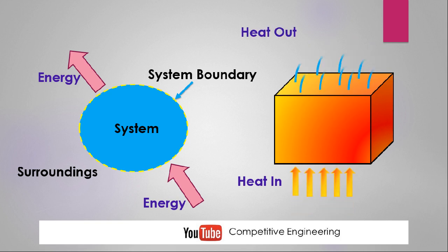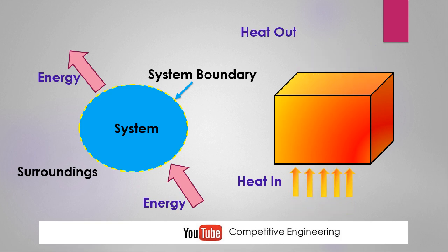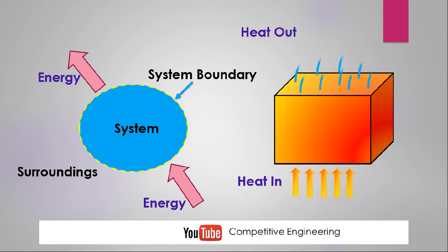When sufficient temperature is reached the cube starts emitting radiation — heat leaves the system to the surroundings. So heat comes in and heat goes out, but there is no mass interaction; the mass remains constant. In a closed system the mass is constant while heat can come in and go out.